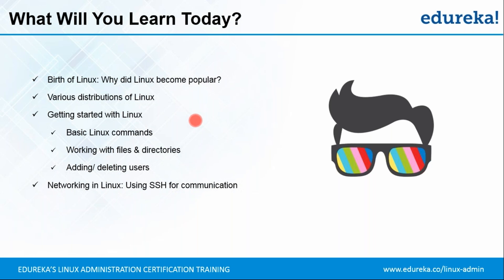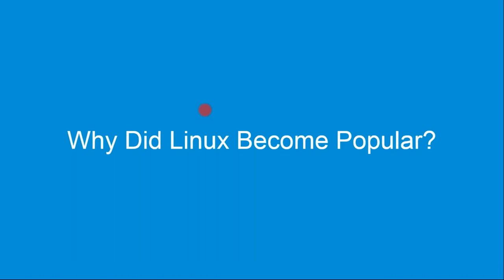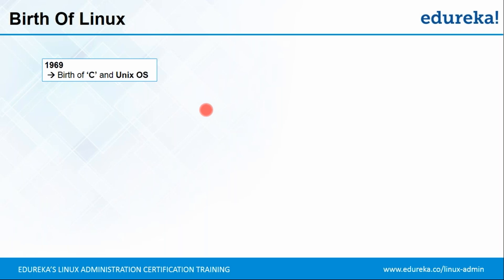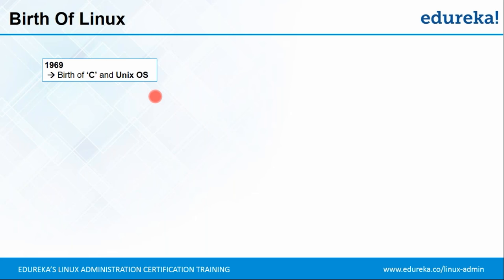Without wasting much time, let's go to the first topic: why did Linux become popular? Before that, let's look at the birth of Linux — how things started off. Back in 1969, there were two people: Dennis Ritchie and Ken Thompson, who were working at AT&T Bell Labs. What they did was create the C programming language. C is one of the most basic and effective languages, the root of all other programming languages. They also developed the Unix operating system. So that was what happened in 1969.